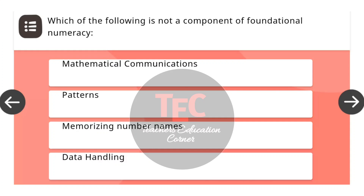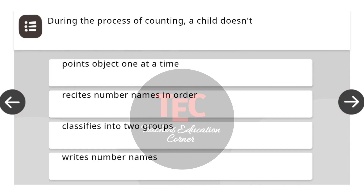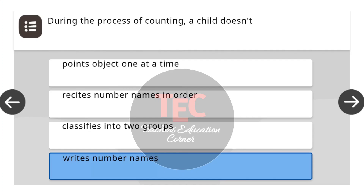Next question: Which of the following is not a component of foundational numeracy? The correct answer is memorizing number names. Next question: During the process of counting, a child does not — the correct answer is writes number names.